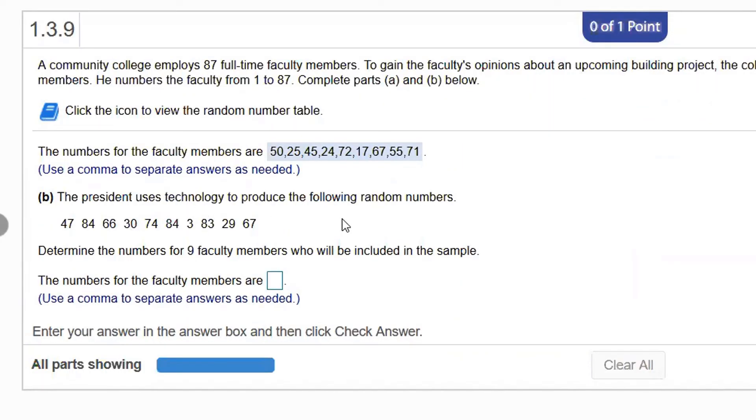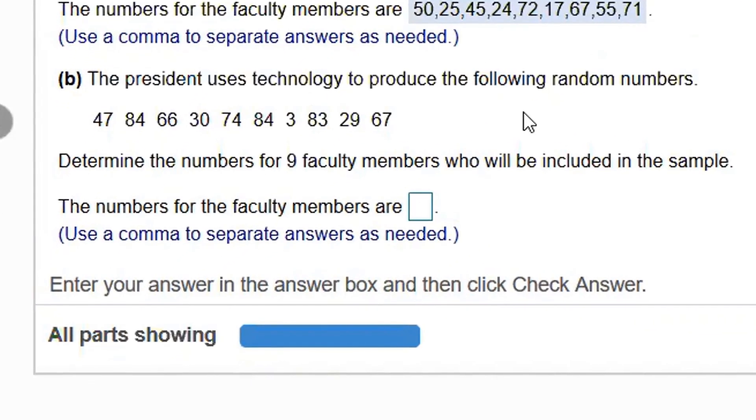Part B says the president uses technology to produce the following random numbers. If you'll notice, there are 10 numbers there. All of them are smaller than 87, so they're all okay. But are there any duplicates in there? Number 84. Yeah, number 84 is used twice.